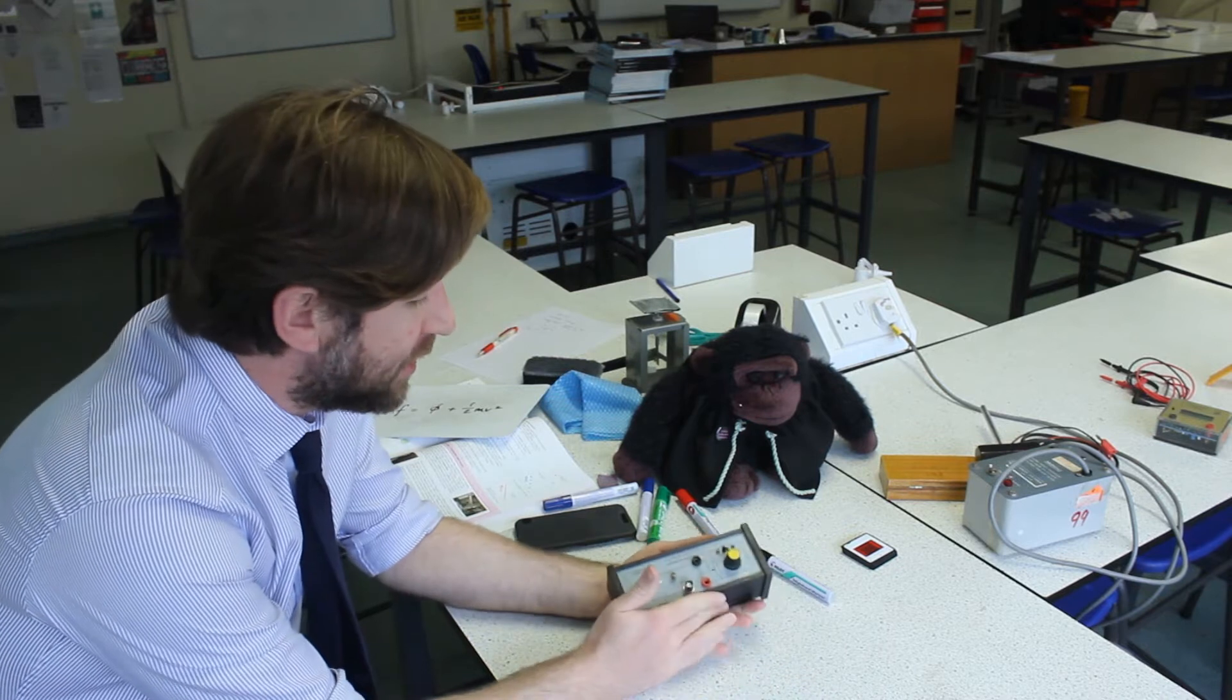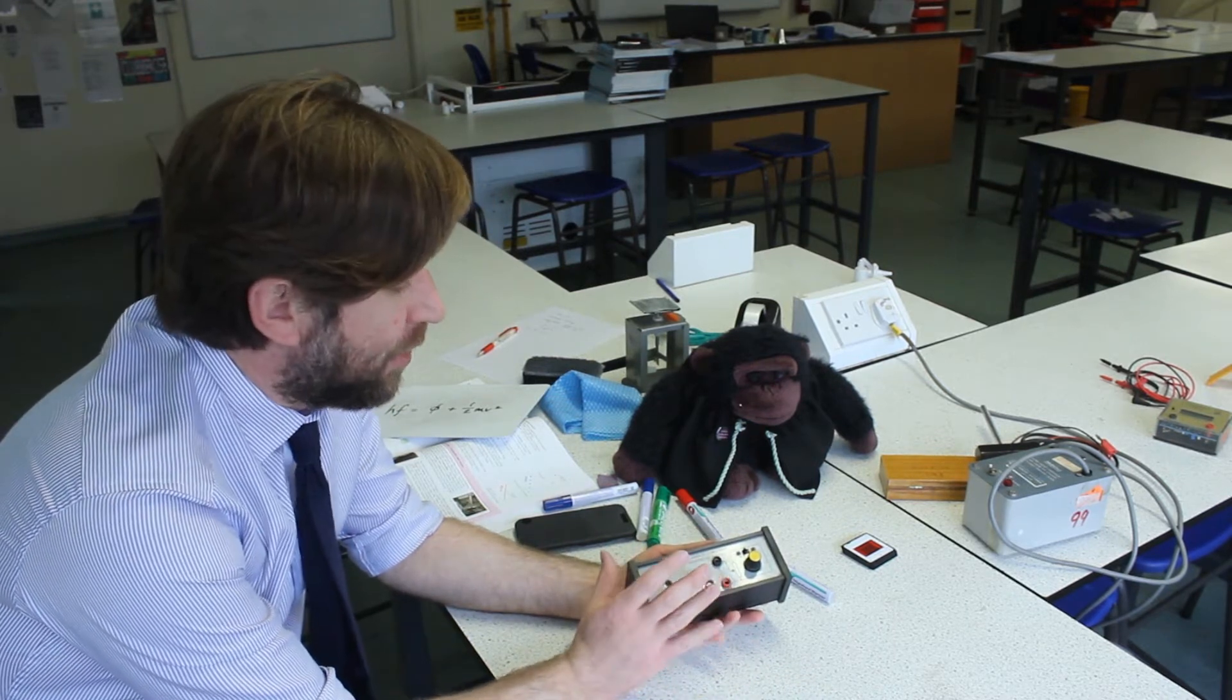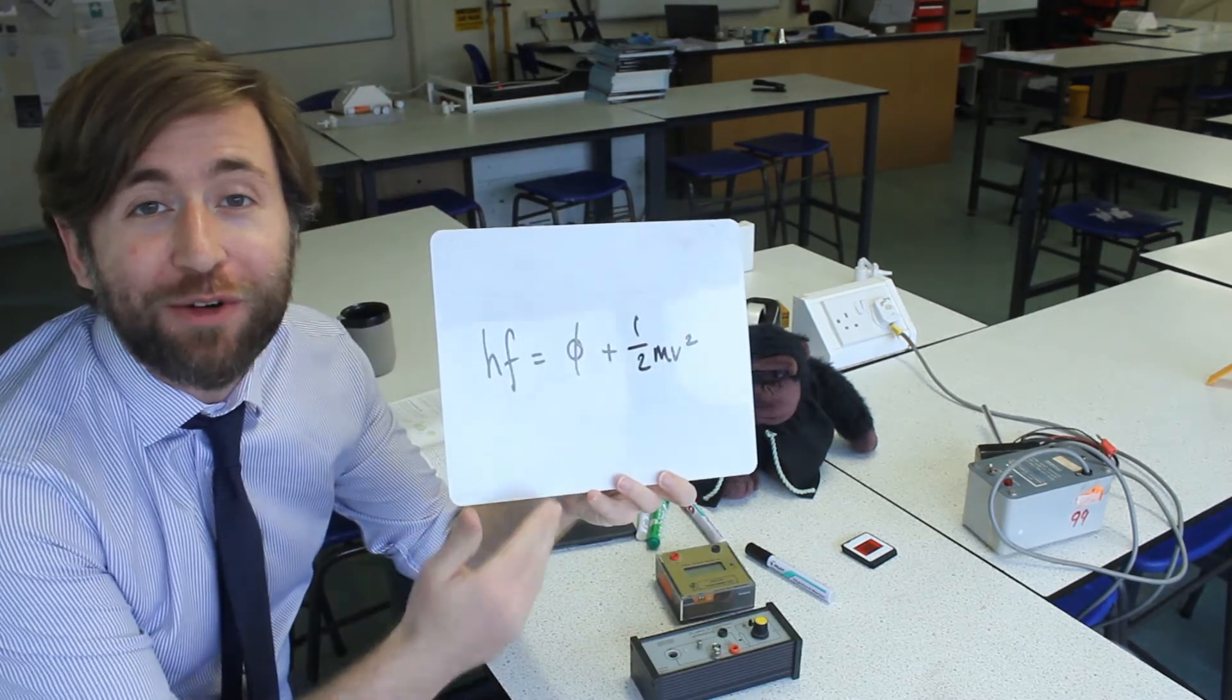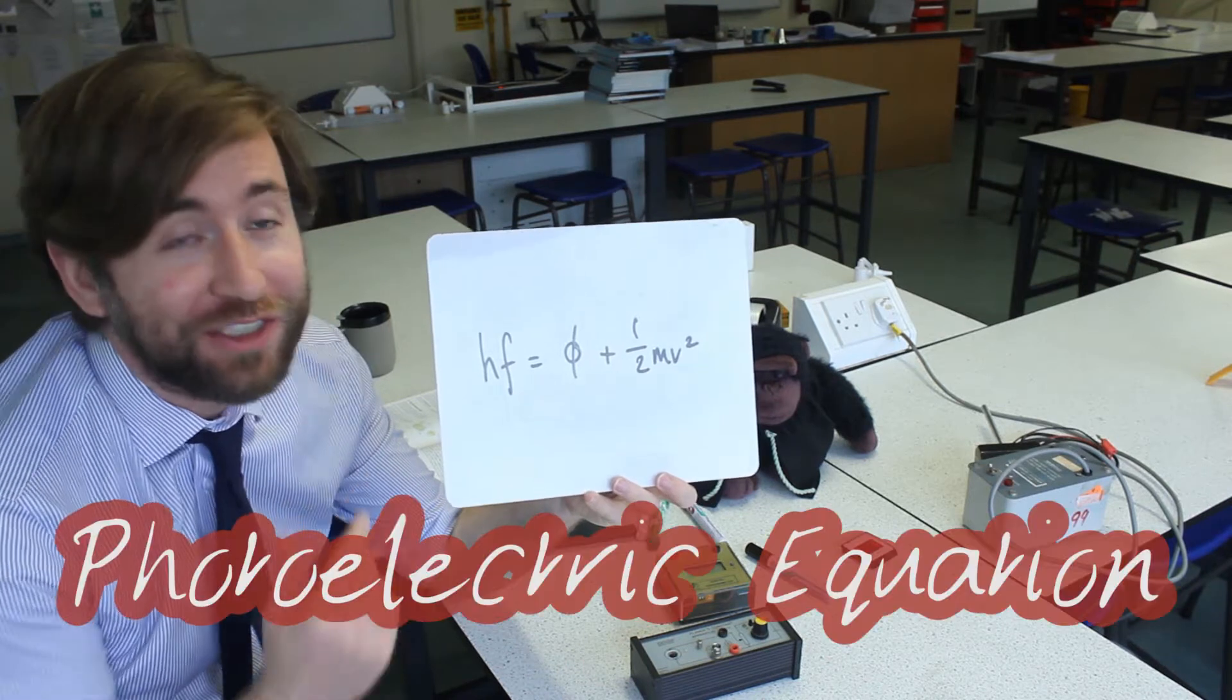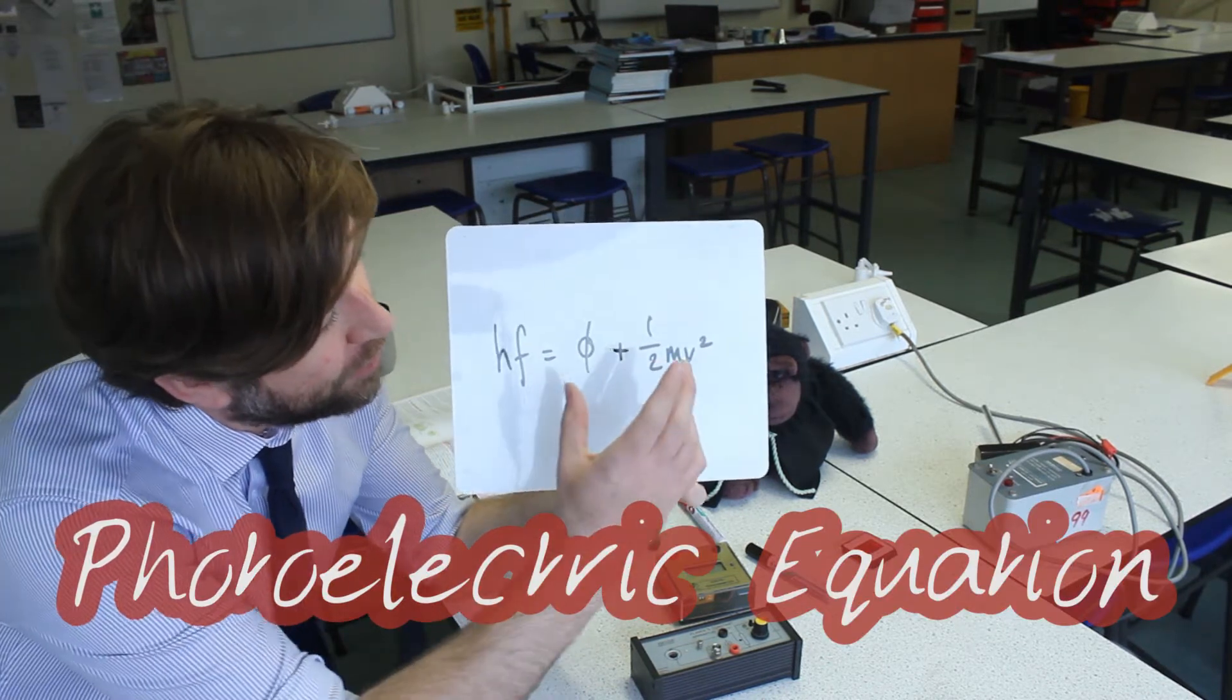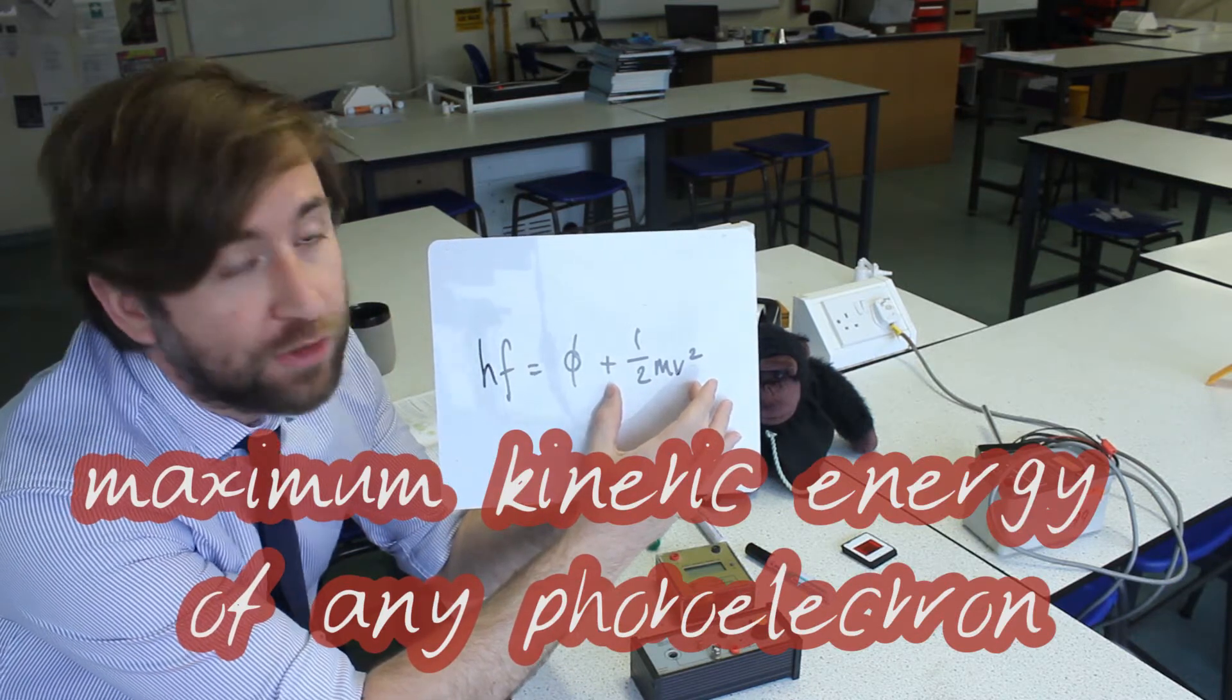I've got a bit of apparatus here which is going to allow us to measure the maximum kinetic energy of these photoelectrons. This is our important equation, Einstein's photoelectric equation, and this is what we're going to use. We're going to come up with a way to measure the maximum kinetic energy of those photoelectrons.